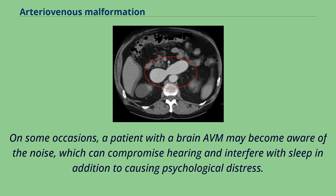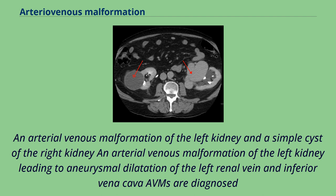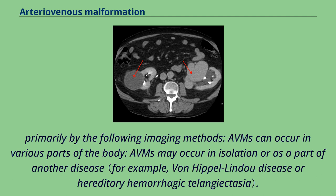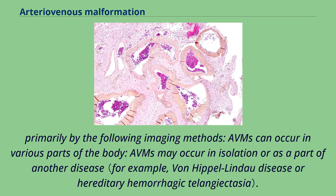An arteriovenous malformation of the left kidney and a simple cyst of the right kidney — arteriovenous malformation of the left kidney leading to aneurysmal dilatation of the left renal vein and inferior vena cava — are diagnosed primarily by the following imaging methods. AVMs can occur in various parts of the body, and may occur in isolation or as part of another disease. AVMs have been shown to be associated with aortic stenosis.